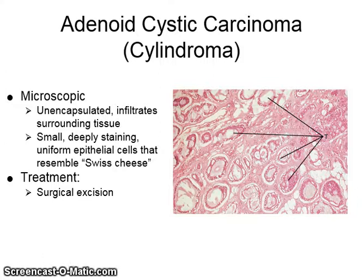The tumor consists of small, deeply staining, uniform epithelial cells that resemble Swiss cheese. It is treated with surgical excision.